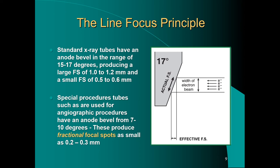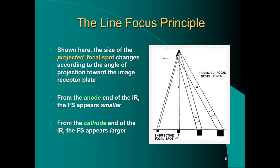Some special procedure tubes, such as angiographic procedure tubes, have an anode bevel that's shallower—seven to ten degrees—and we get smaller focal spots somewhere around the 0.2 to 0.3 millimeter mark.